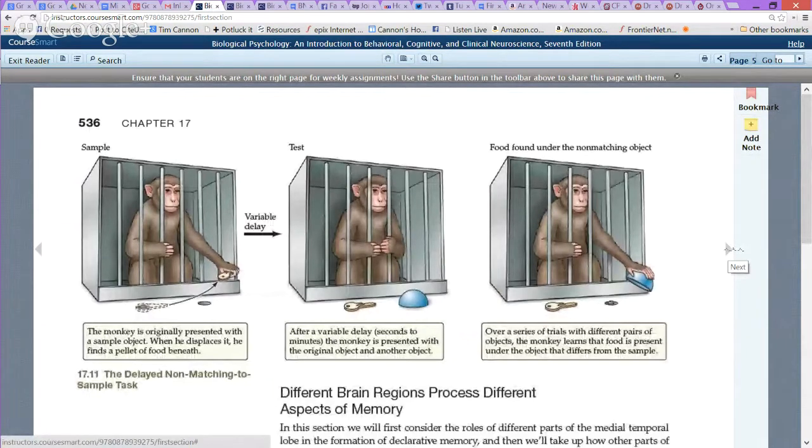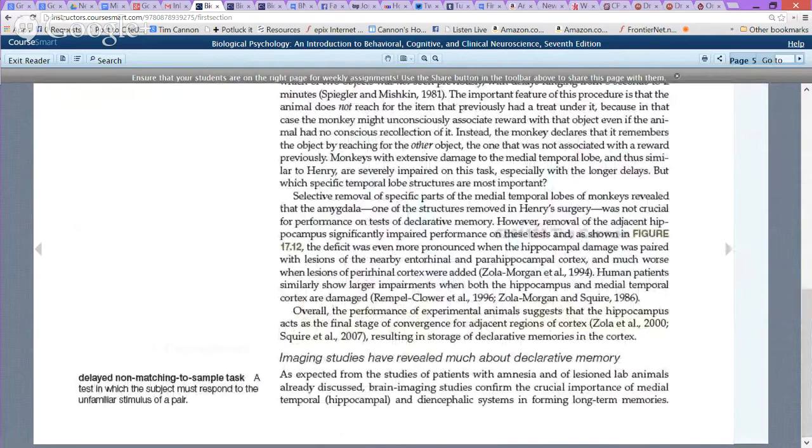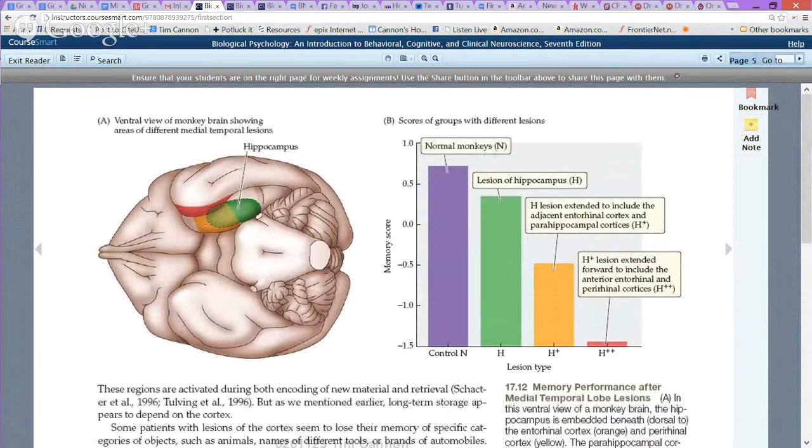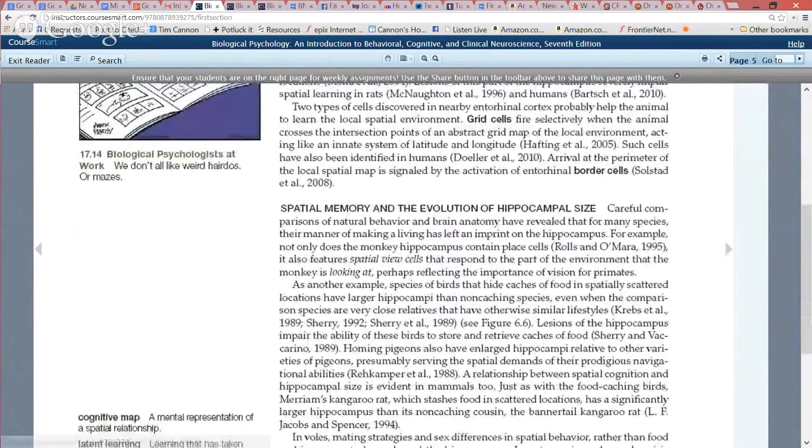This is a nice little demonstration of delayed matching the sample, which is a fairly high-end type of memory task that you can do with primates and even with people. This is a nice picture. This is a rhesus monkey, it looks like to me. And this is the view of the underside of the temporal lobe. And they're looking at amounts of lesions and relative amounts of deficits as things go down. So the larger the lesion, no surprise, the greater the loss. That's a joke, which is too useful.